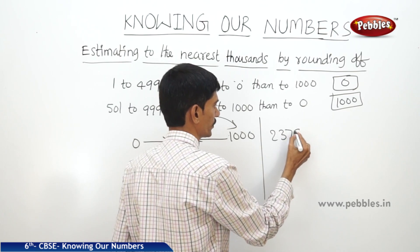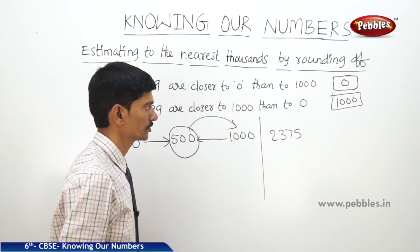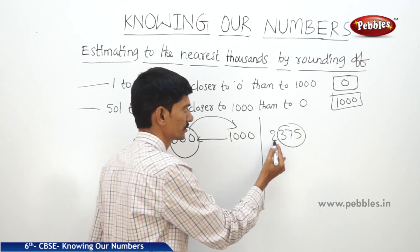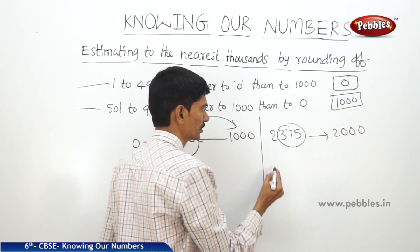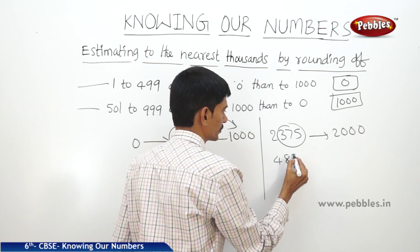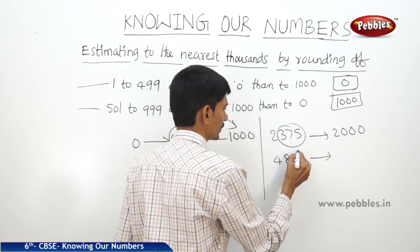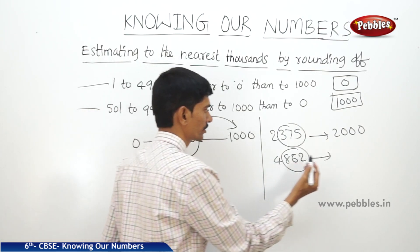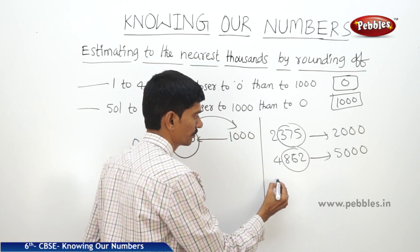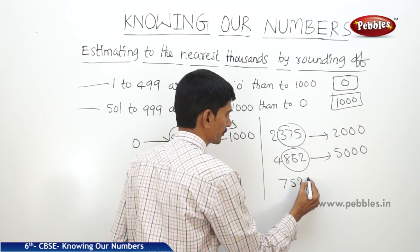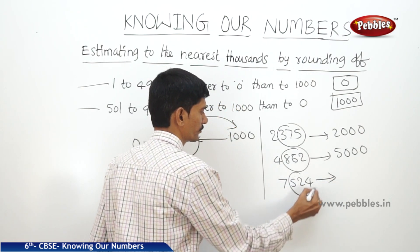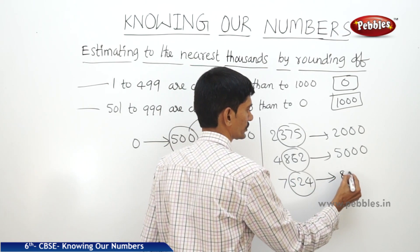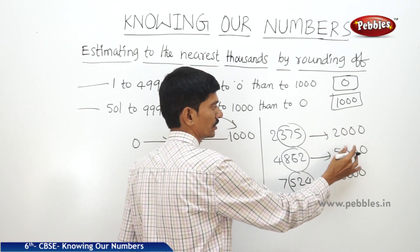The number 500 is equidistant from 0 and 1000, but it is common practice to round off 500 to 1000. For example, 2375 — here 375 belongs to the first case, so it rounds to 2000. And for a number like 7000-something, adding 1000 gives 8000. These are the numbers rounded off to the nearest 1000.